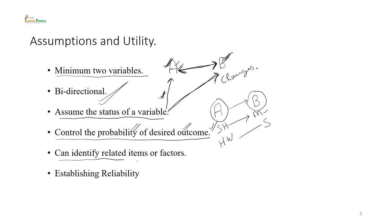अब जो next utility है वो है 'identify related items or factors'। जब हम लोग कोई scale बनाते हैं या psychological कोई measure develop करते हैं तो उसमें बहुत सारे items develop करते हैं। वो items उस construct की definition और उसके dimensions के आधार पर बनाए जाते हैं। Scale के development के process में हम identify करते हैं कि जो dimensions हमने बनाए हैं, क्या वो dimensions एक दूसरे से correlated हैं या नहीं, और उन dimensions को measure करने के लिए जो items develop किये हैं वो आपस में correlated हैं या नहीं।